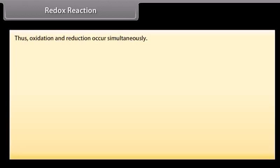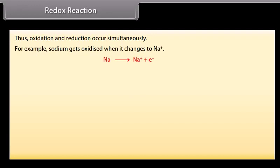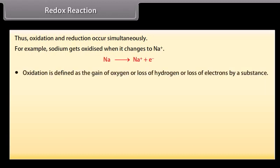Thus, oxidation and reduction occur simultaneously. For example, sodium gets oxidized when it changes to Na+. Oxidation is defined as the gain of oxygen or loss of hydrogen or loss of electrons by a substance.